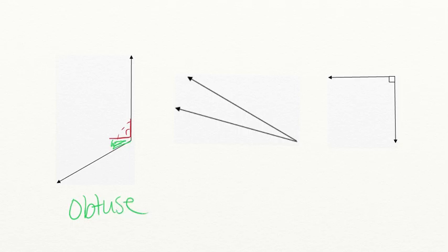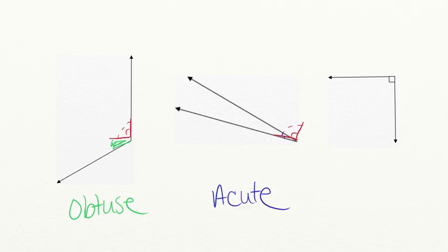Let's check our next angle. Again, we are going to draw a 90-degree angle against this angle. As we can see, this angle doesn't quite make it all the way to 90 degrees — it's much smaller — so that means it's an acute angle. Let's try one more: this angle already has a square in the corner, which means it's already a 90-degree angle, also known as a right angle.